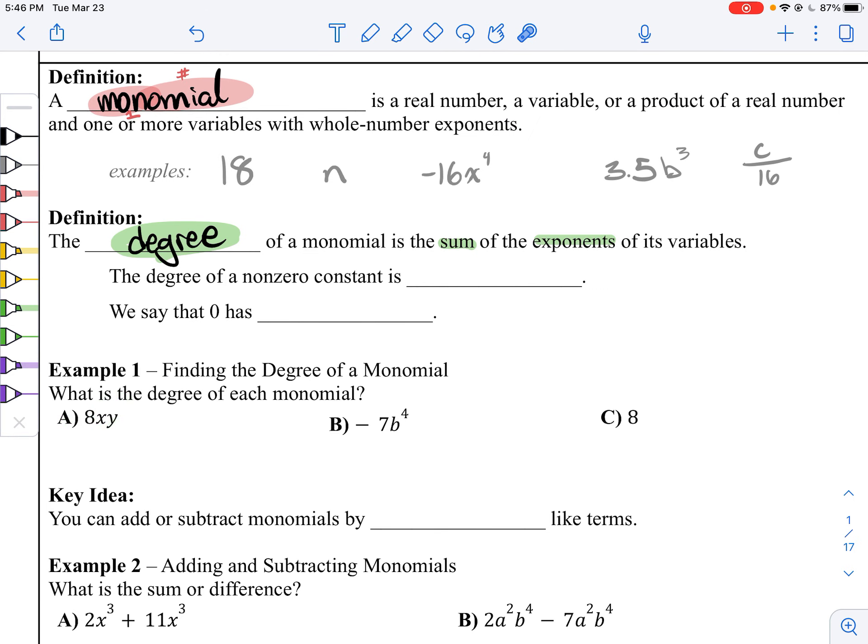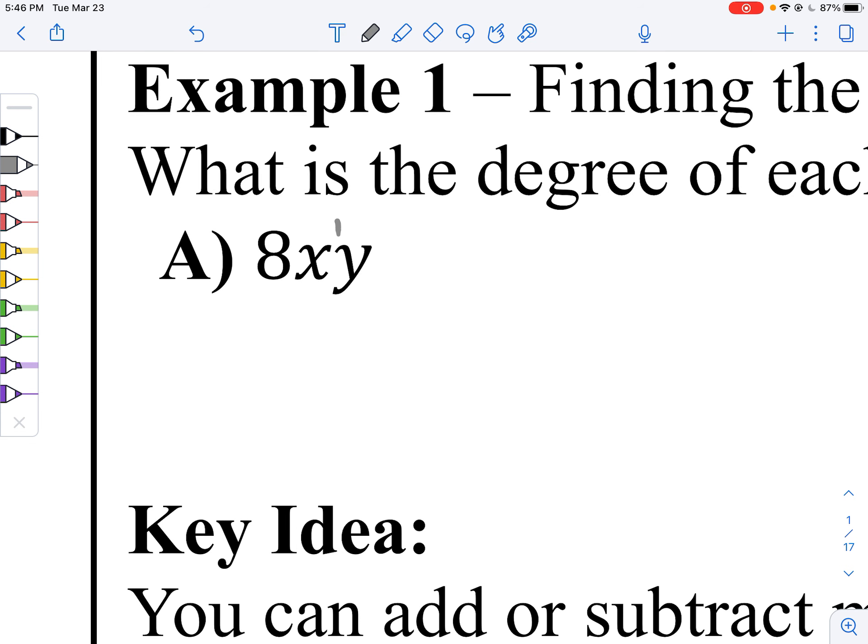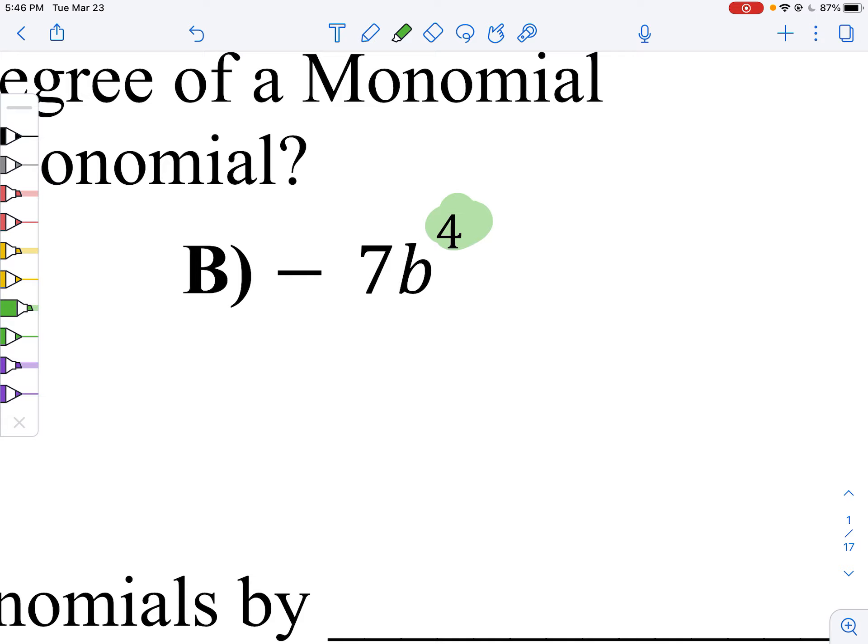This guy right here, they've got hidden exponents of 1 and 1. So the degree here is 2 because 1 plus 1 is 2. The degree here, just look for the biggest exponent. The only exponent is 4. So the degree is 4.